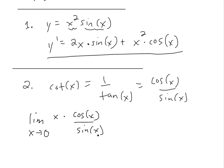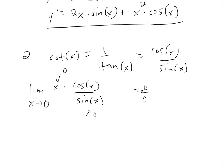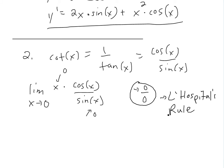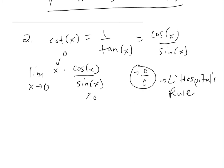Now we can't just plug in x equals zero here because we'll get zero in the numerator and zero in the denominator — a case of zero over zero, which is an indeterminate form. We could apply L'Hôpital's rule to solve this. My calculus book does it another way first, so I'll do it their way first and then L'Hôpital's rule after.